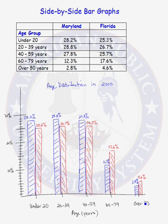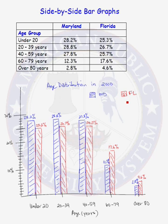One thing we need to add to a side-by-side bar graph is a key, so that the reader knows which bar goes with which population. Our key says that the blue bars are for the state of Maryland, and the red bars are for the state of Florida.